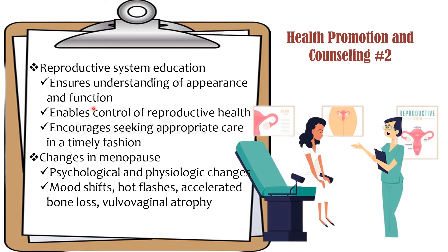An accurate understanding of the normal appearance and function of the reproductive system enables a woman to take control of her reproductive health through family planning, recognize pregnancy and pregnancy problems, understand maturation changes, and seek appropriate care in a timely fashion. Ensure understanding of the appearance and function of the reproductive system. Also explain and inform the patient about psychological and physiological changes during menopause — including mood shifts, hot flushes, accelerated bone loss, and vulvovaginal atrophy — so that strategies to prevent or manage these can be developed.